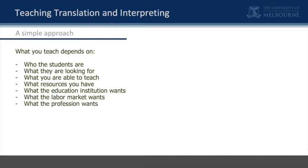That's not quite the same thing as what the profession wants. What should we be doing, for example, to improve the public image and status of translators and interpreters as collectivities? You see that very quickly this simple question — what do we teach — depends on a whole lot of factors.